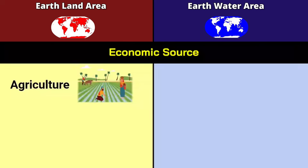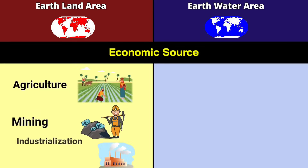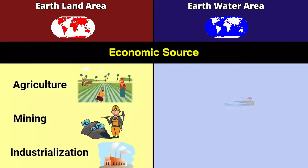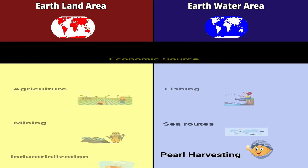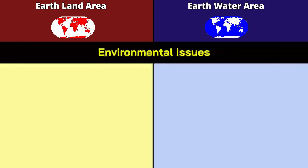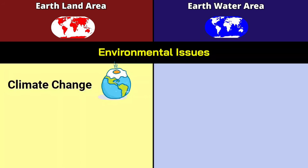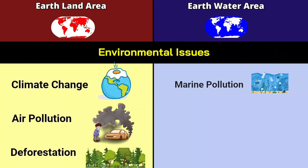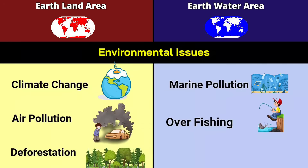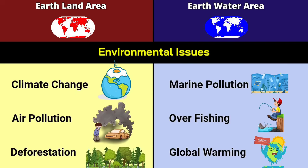Economic sources on land: agriculture, mining, and industrialization. In water: fishing, sea routes, and pearl harvesting. Environmental issues on land: climate change, air pollution, and deforestation. In water: marine pollution, overfishing, and global warming.